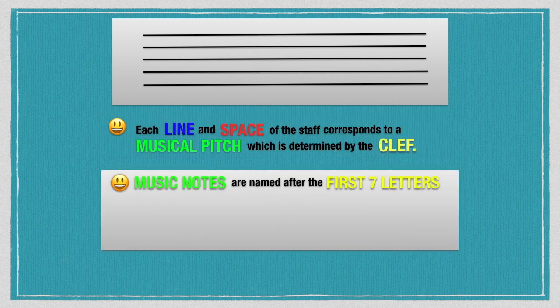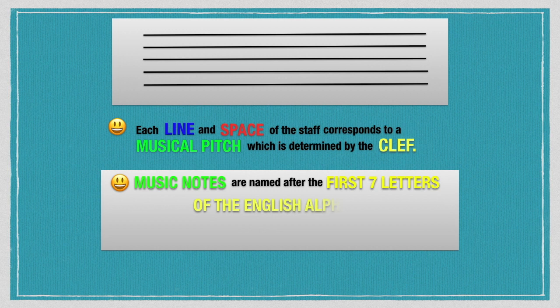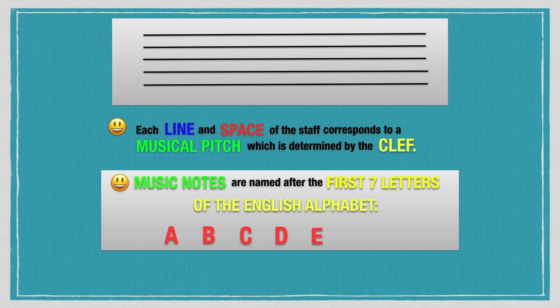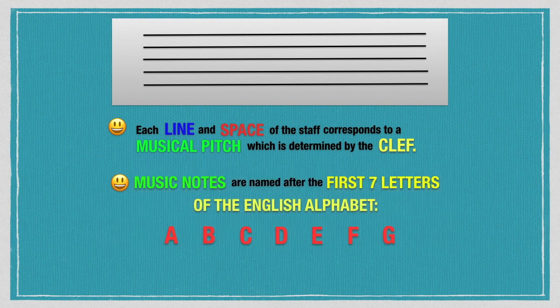Music notes are named after the first seven letters of the English alphabet. Those are the A, B, C, D, E, F, and G.